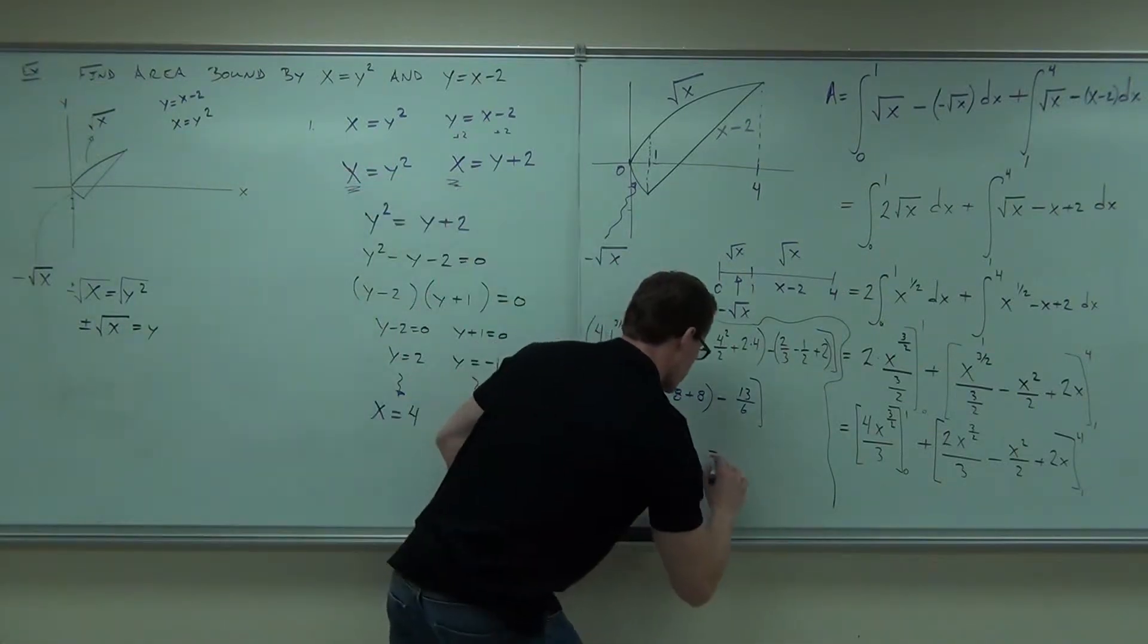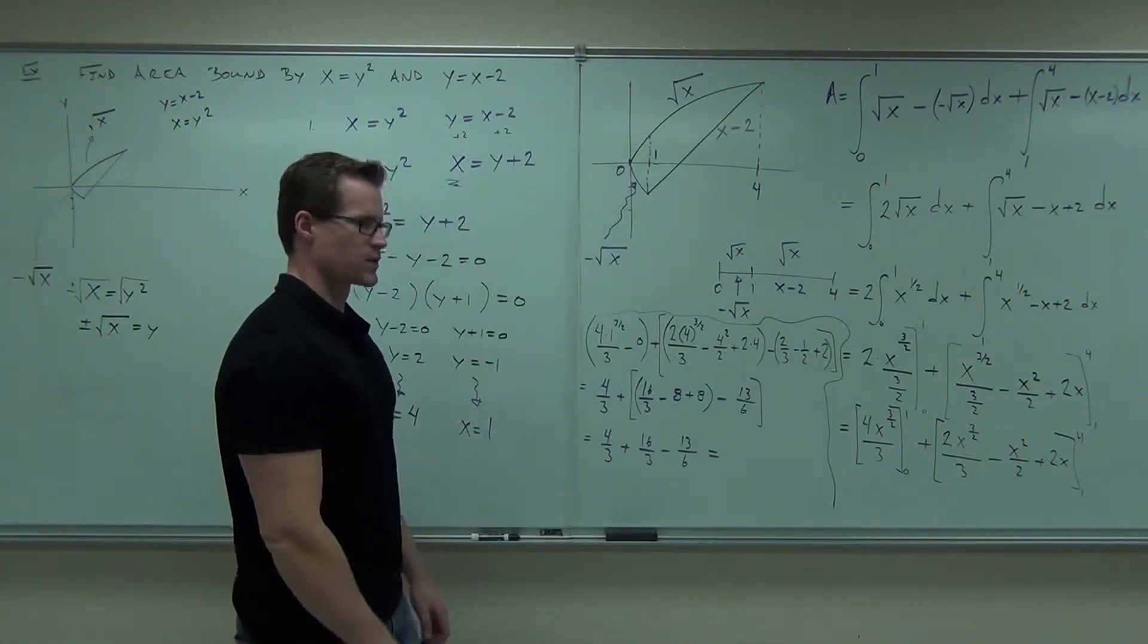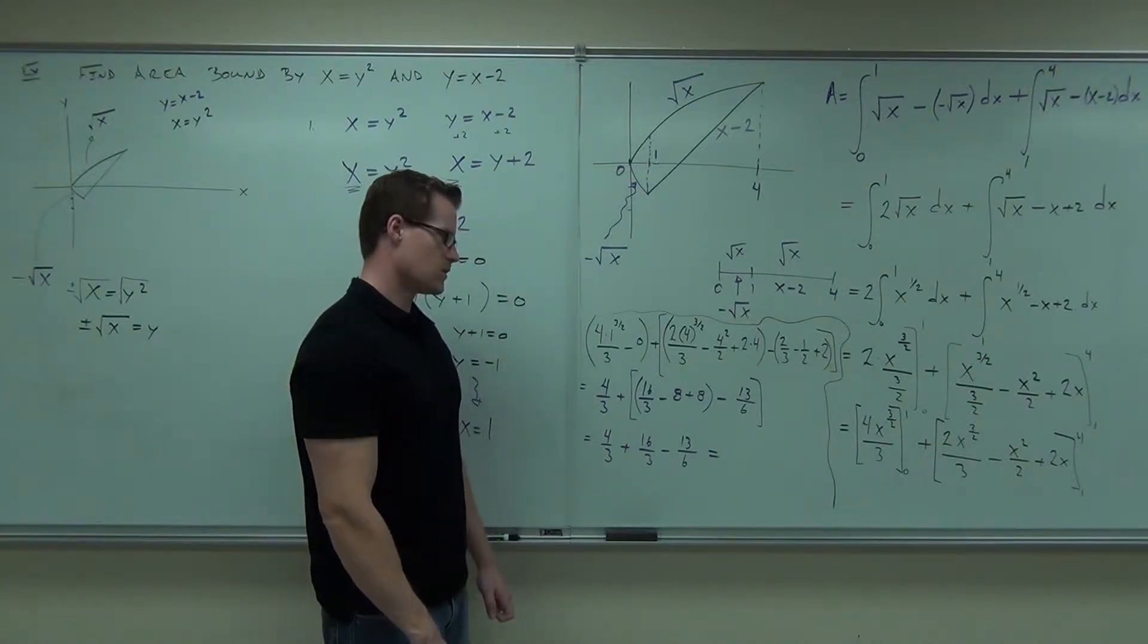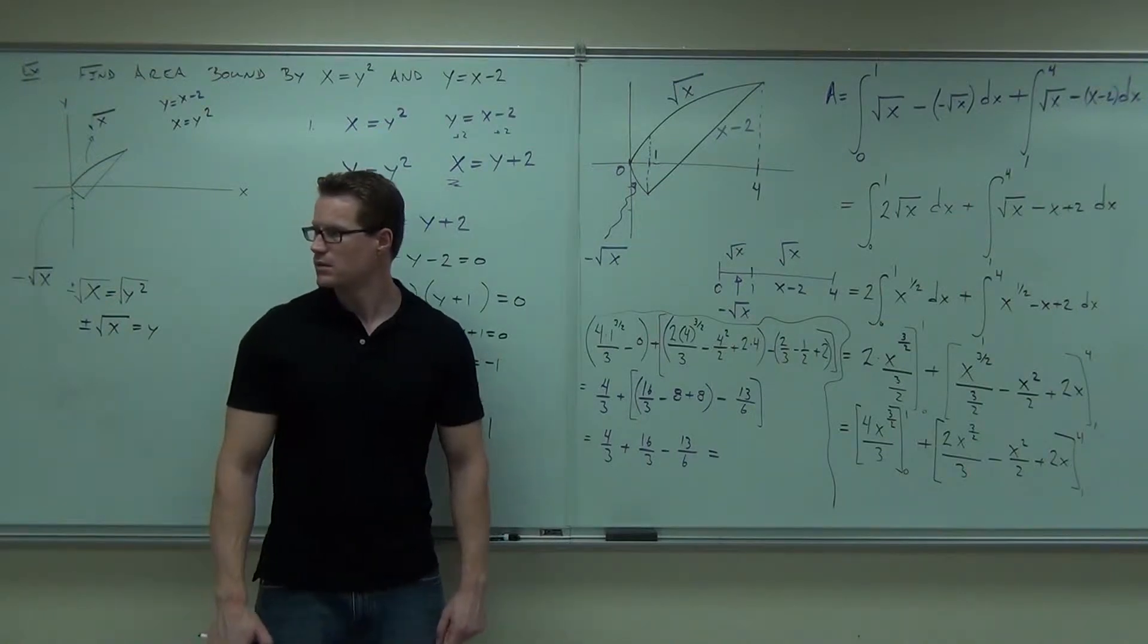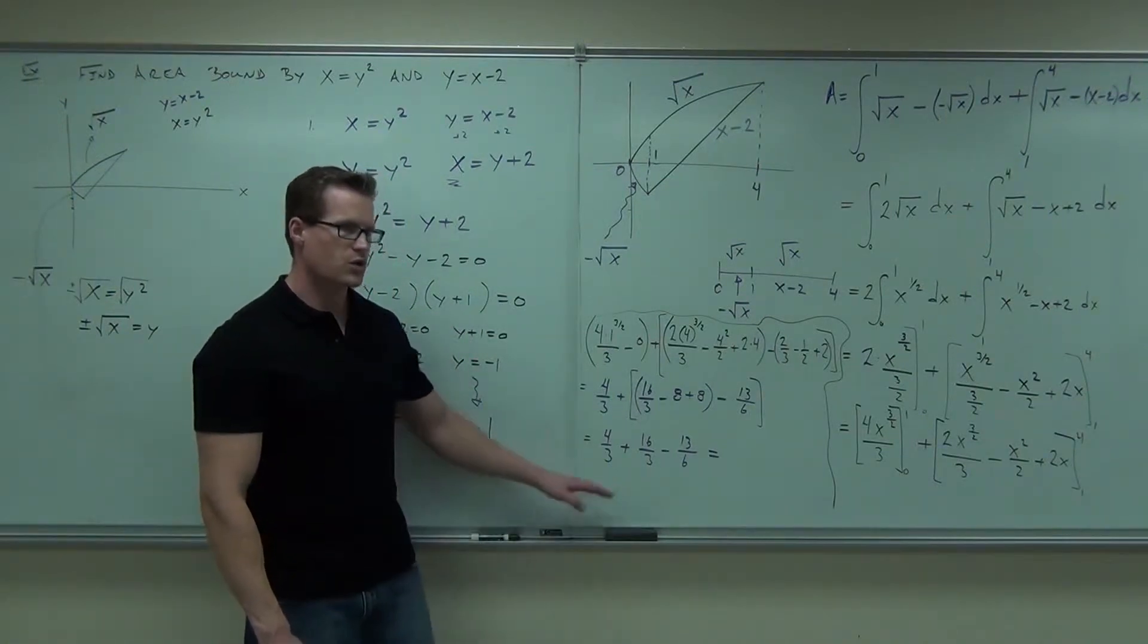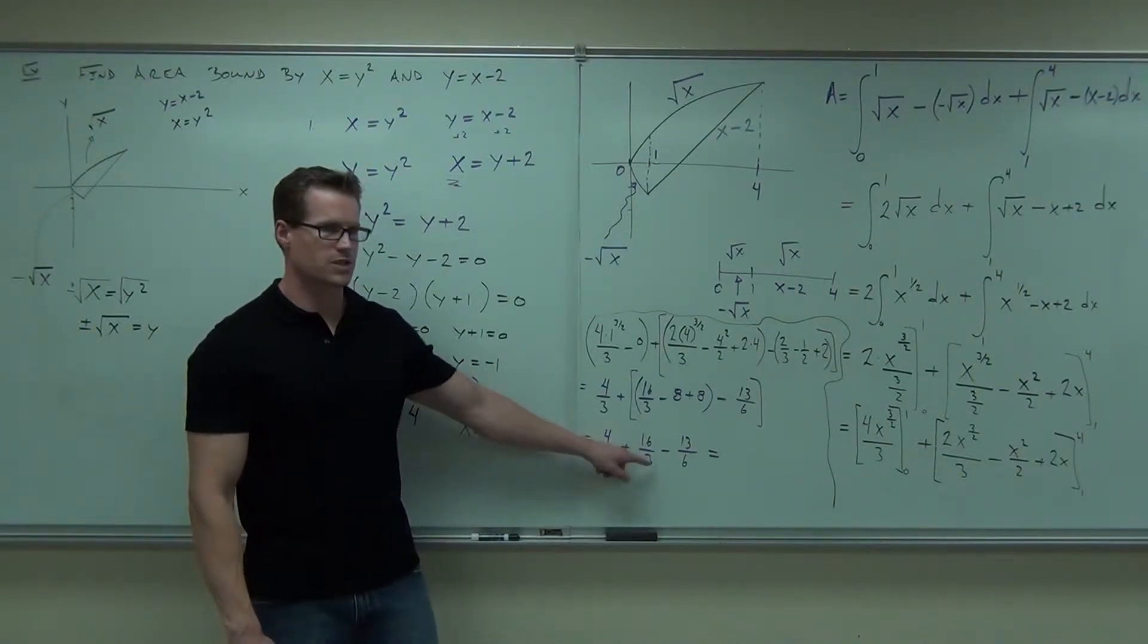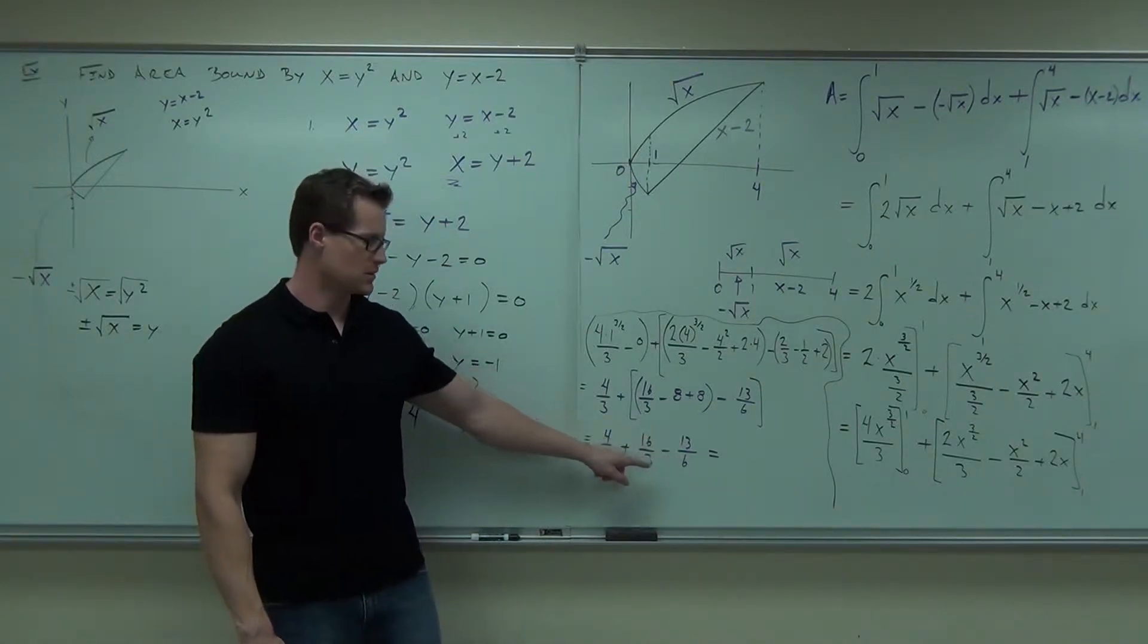And then all said and done when you're, let's see, multiply by 2, 32, 8, 40, 53 over 6? No. Make sure I'm good up to here. I got 4 thirds. 4 thirds, 16 thirds. Minus 13 sixths.